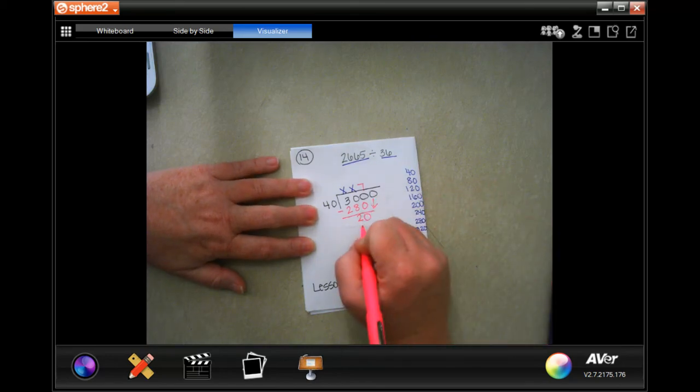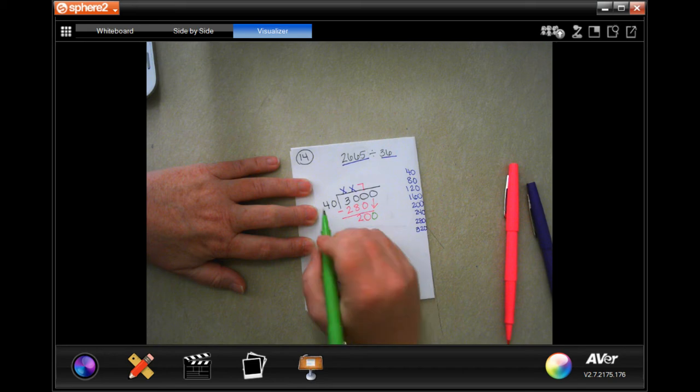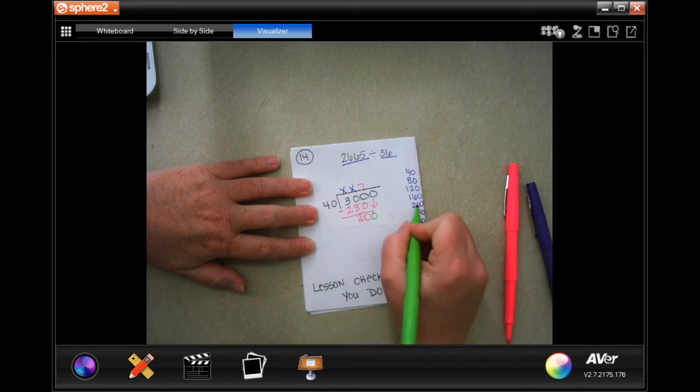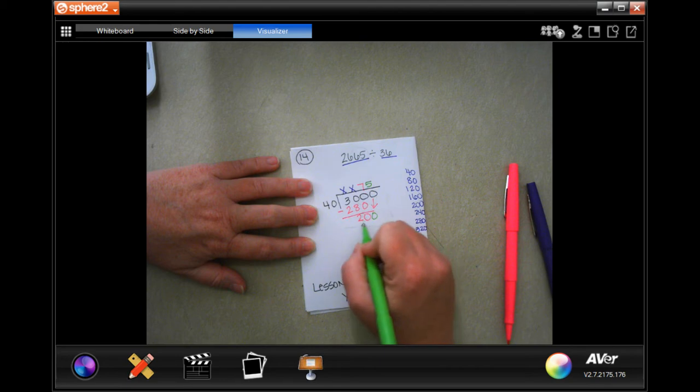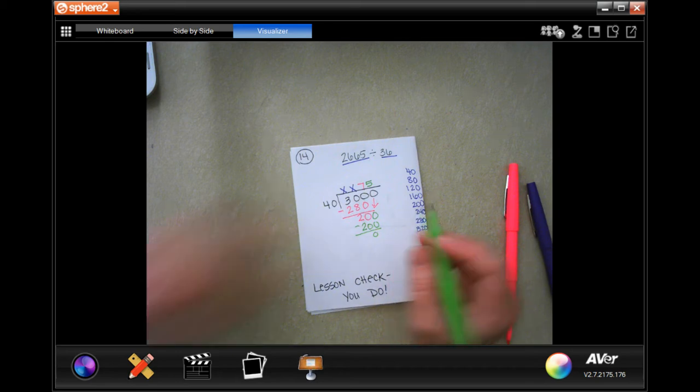Now I have to bring down that zero. 40 into 200, it looks like it's going to go 1, 2, 3, 4, 5 times. That is 200. We have nothing left. So 75 boxes. Label the problem: word, answer.